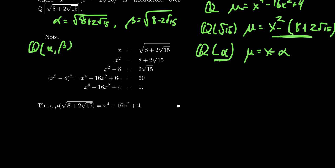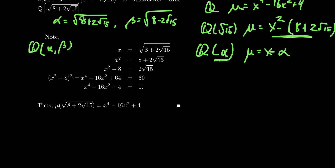To find the minimal polynomial over Q, we keep going. Move just the 8 to the other side: x² - 8 = 2√15. Square both sides again. On the left-hand side, FOIL gives x⁴ - 16x² + 64. On the right-hand side, (2√15)² = 4 × 15 = 60. Subtracting 60 from both sides gives g(x) = x⁴ - 16x² + 4 = 0. This allows us to construct the minimal polynomial μ of α over the rational field.